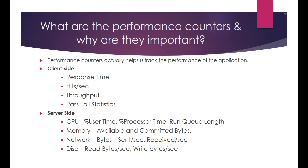For CPU, we look at percentage of user time, percentage processor time, and run queue length. For memory, we look at available and committed bytes. For network, we look at bytes sent per second and bytes received per second. For disk, we look at read bytes per second and write bytes per second.